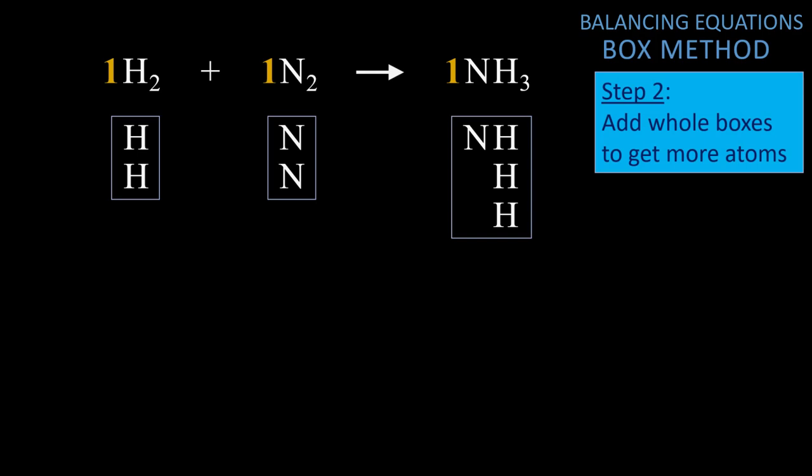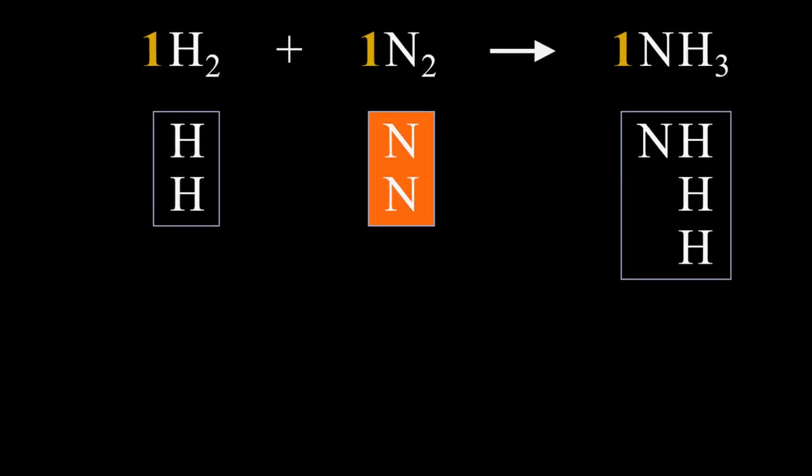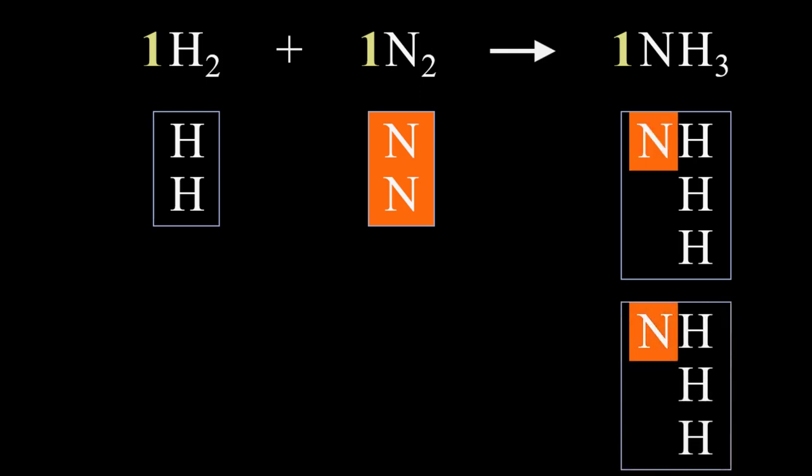For step 2 we add whole boxes to get more atoms. There are 2 nitrogens on the left, so we need another N on the right to balance. We can only add whole boxes, so we add a box of NH3 to get 1 more nitrogen, and now both sides of the arrow have 2 nitrogens.